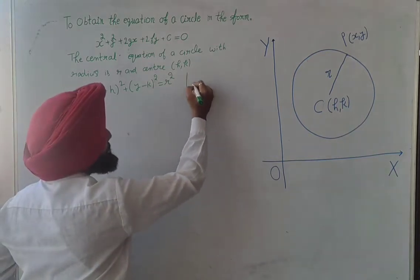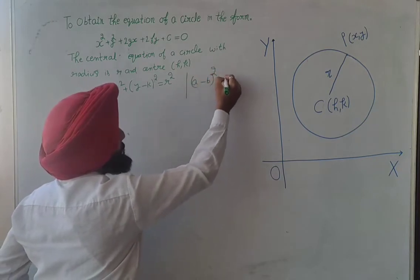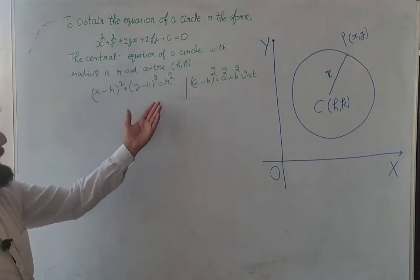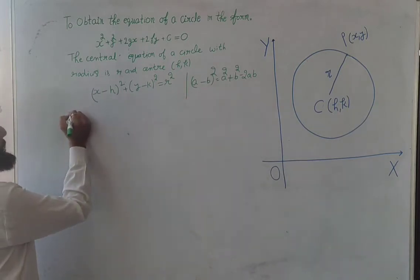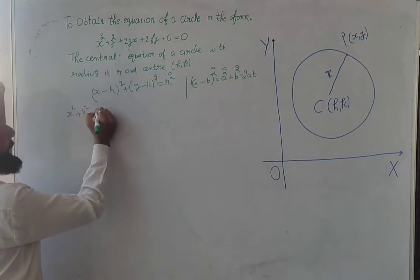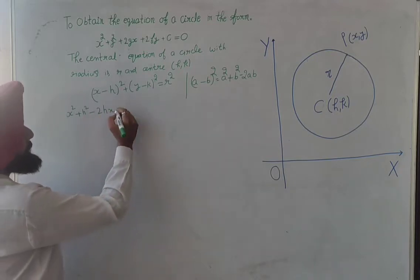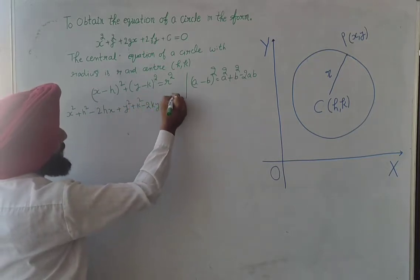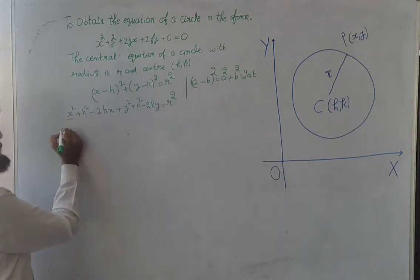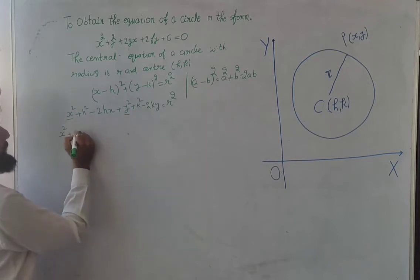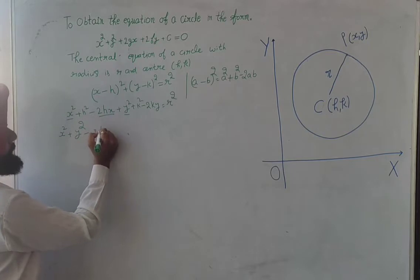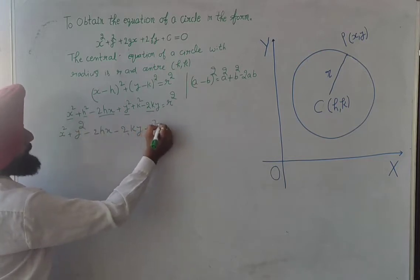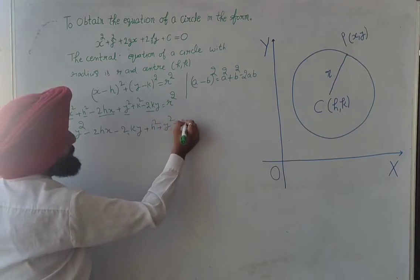Now, a minus b square equals a square plus b square minus 2ab. So apply the formula here: x square plus h square minus 2hx plus y square plus k square minus 2ky equals r square. Now write x square plus y square minus 2hx minus 2ky plus h square plus k square equals r square.